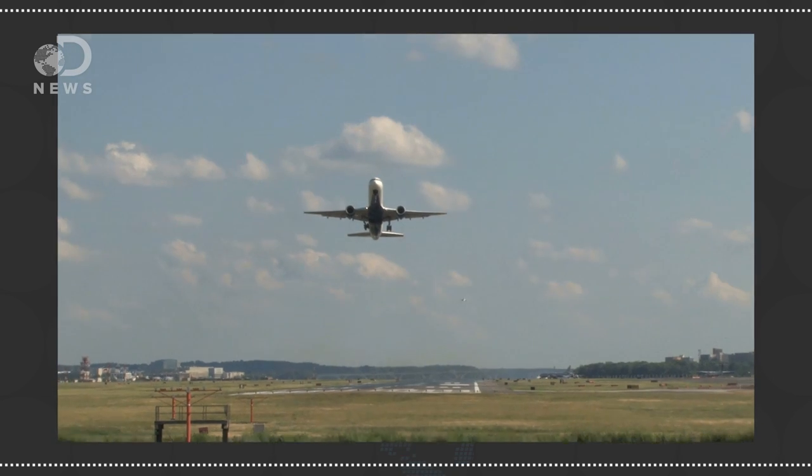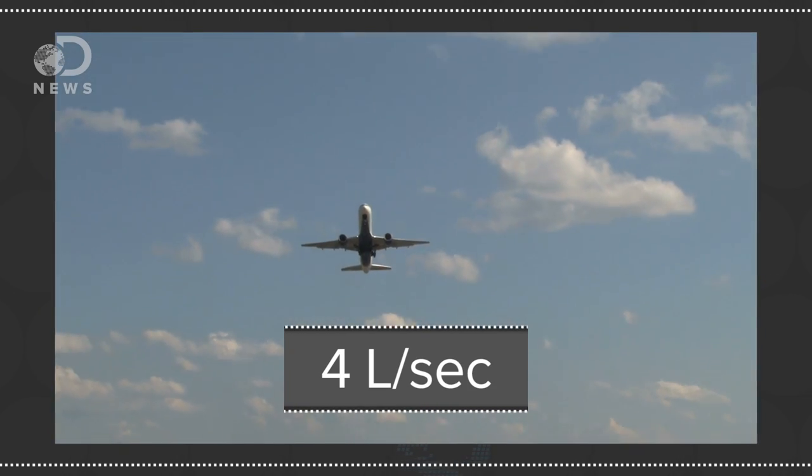A Boeing 747 uses about one gallon of fuel per second, or about 5 gallons per mile, and there are around 7,000 flights over the U.S. at any given moment. And that's a lot of fuel to replace, but it also makes for a huge market.